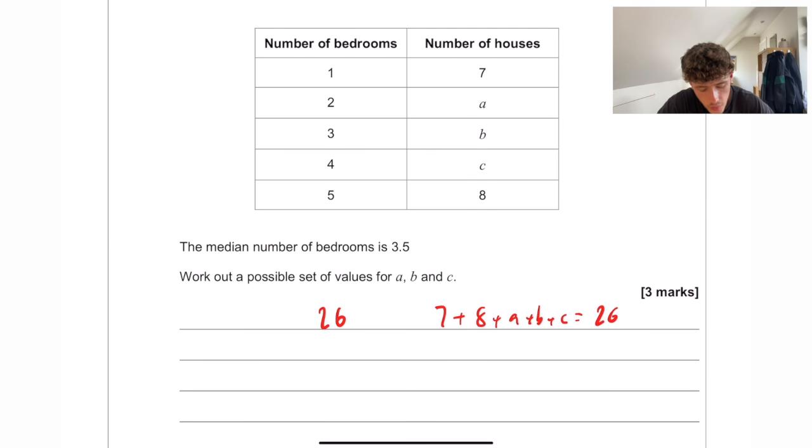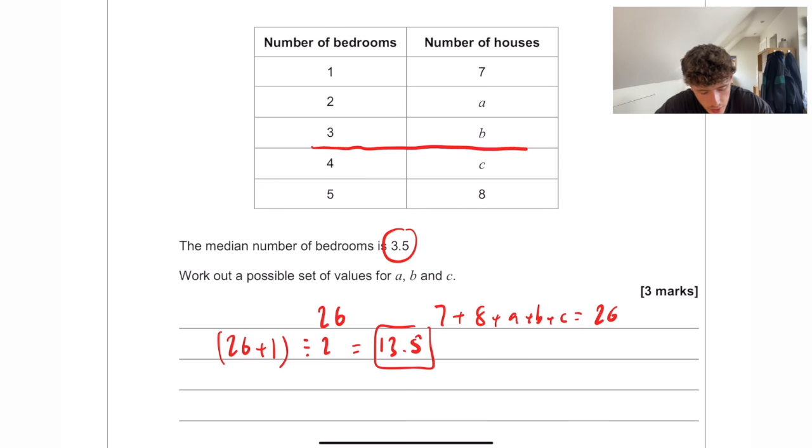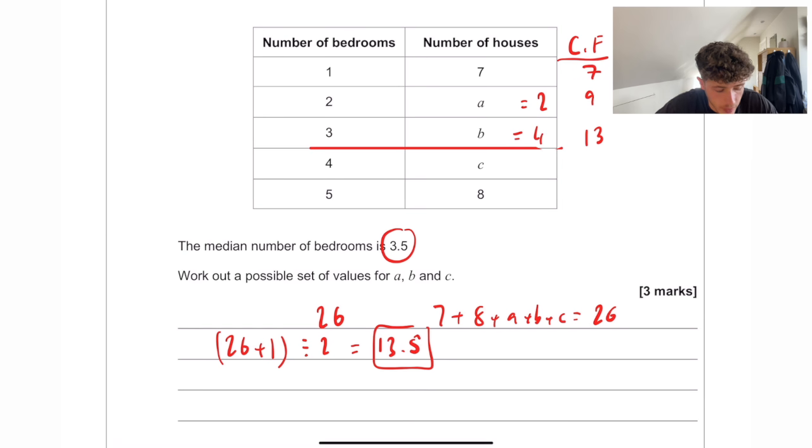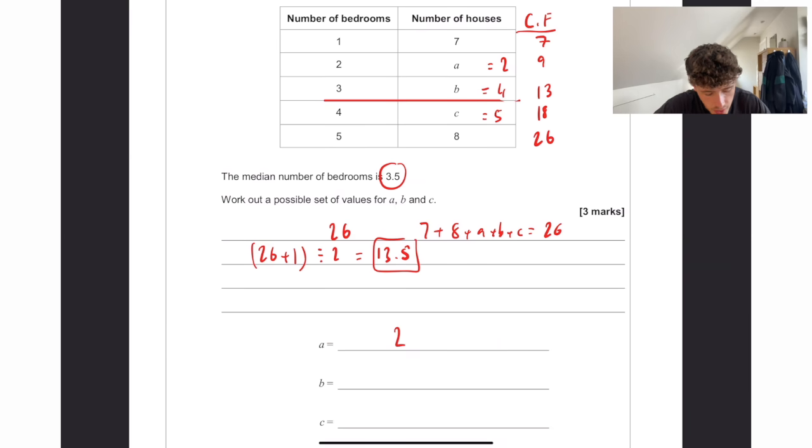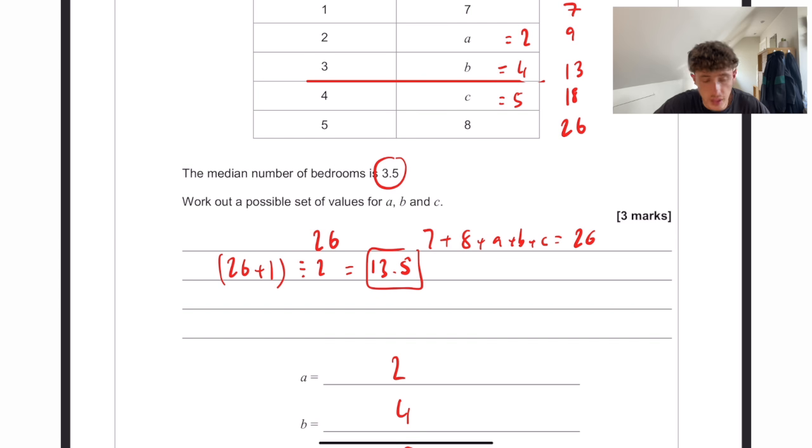Now the median value falls at 26 plus 1 divided by 2, which is going to be the 13.5th house. Now to get a median of 3.5, that must mean it must be exactly in between the 3 and the 4. If we do like a cumulative frequency on the right hand side, that's 7. If we add 2 to that, that makes 9. We want 3 to be at 13. So that must have to be at 4, making our total 13. C has to be something else to make sure that by the end of it, they all add up to 26. So this must have to be 5. That would make it 18. And that would be 26. So A we're saying is 2, B is 4, and C is 5. And that should give you the right answer.